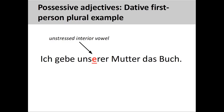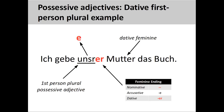The first and second person plural adjectives present us with some difficulties, as they both contain an unstressed interior vowel. For example, in the sentence 'Ich gebe unserer Mutter das Buch' — I give the book to our mother — it is difficult to pronounce the interior 'e' in the root when the dative feminine ending 'er' is added on. It is not uncommon, therefore, to drop this interior 'e' when the first and second person plural adjectives add an ending. 'Ich gebe unsrer Mutter das Buch' — this is much easier to pronounce.